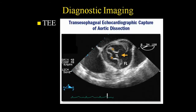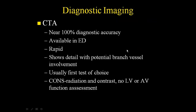So: CT first, then consider TEE or MRI if CT isn't available or adequate. Here's a TEE image looking right down on top of the aorta — you can see a flap sitting in the middle, right at the sinuses of Valsalva, which should not be there. CT has essentially 100% diagnostic accuracy, can be done from the emergency department quickly, and can show branch vessel involvement — whether the dissection is extending into the iliac, SMA, subclavian, or carotid arteries.